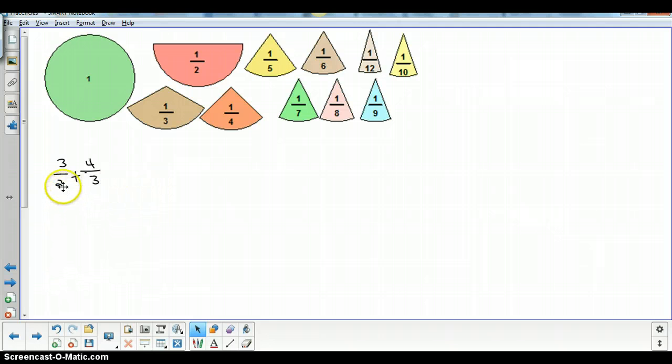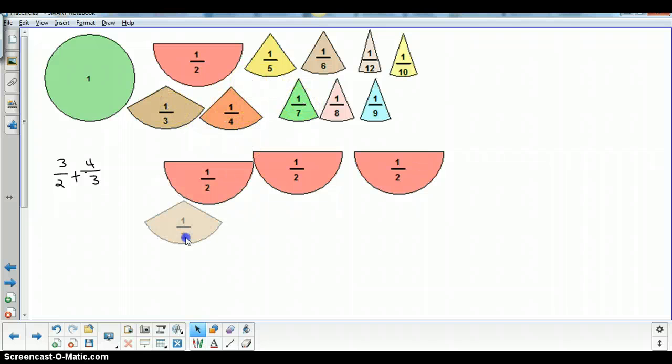As we know, we need to have the same or a common denominator to be able to add two fractions. So what we'll start with is building our numbers, which is 3 halves and 4 thirds.